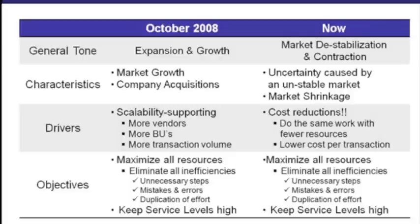What is it like now? The general tone is completely different. Everybody is basically saying they're going to contract in terms of their efforts. The market is very unstable right now — what can we do just to survive? Zero percent growth is the new growth; that is considered doing very well in today's economy. The market is shrinking, there are less opportunities, and instead of companies being acquired, people are now going bankrupt. Everybody is really in the mode of cost reductions.